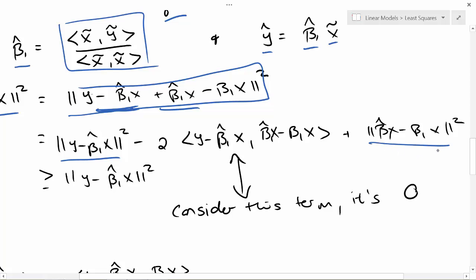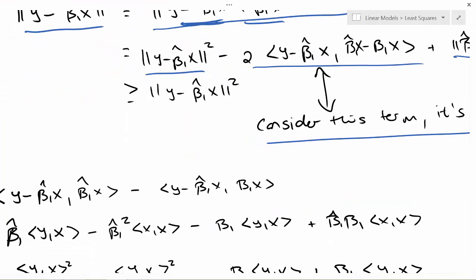We're going to expand out this inner product and we get these three terms. And again, as we've argued in multiple instances going through these sorts of arguments in the class, if this term is 0, then beta hat will be the maximum. So let's assume beta hat is this value right here and demonstrate that that term is 0.